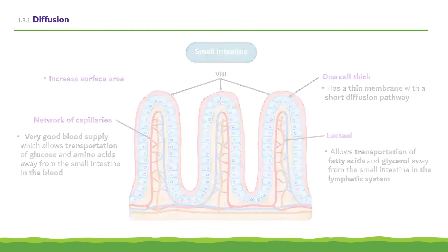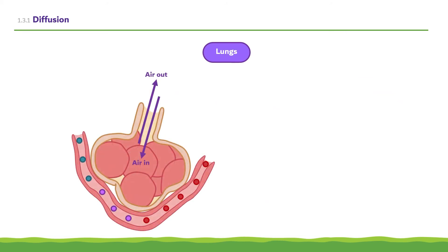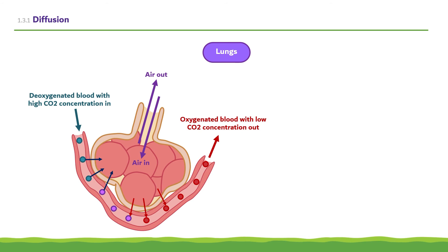In humans, gas exchange occurs in the lungs. The function of the lungs is to transfer oxygen into the blood and to remove carbon dioxide produced by cells. The blood enters the lungs deoxygenated, with a low oxygen concentration but a high carbon dioxide concentration as it returns from the body. Carbon dioxide leaves the blood and diffuses into the alveoli, and oxygen enters the blood from the alveoli, reoxygenating it. The blood leaves the lungs oxygenated, with a low carbon dioxide concentration.